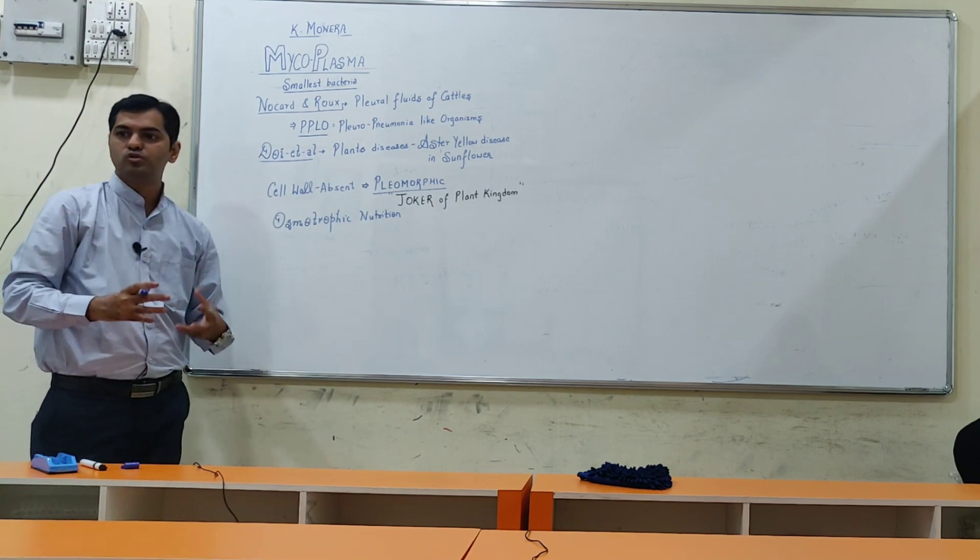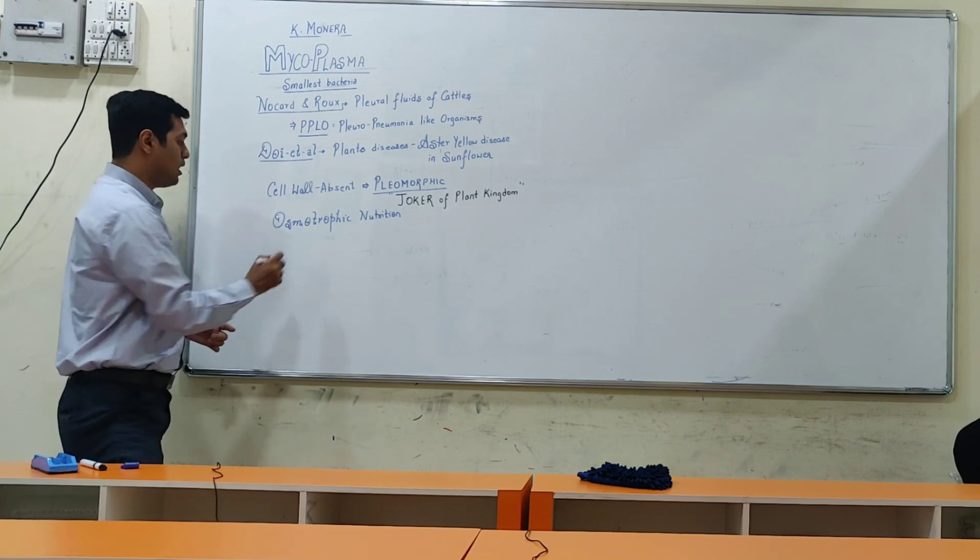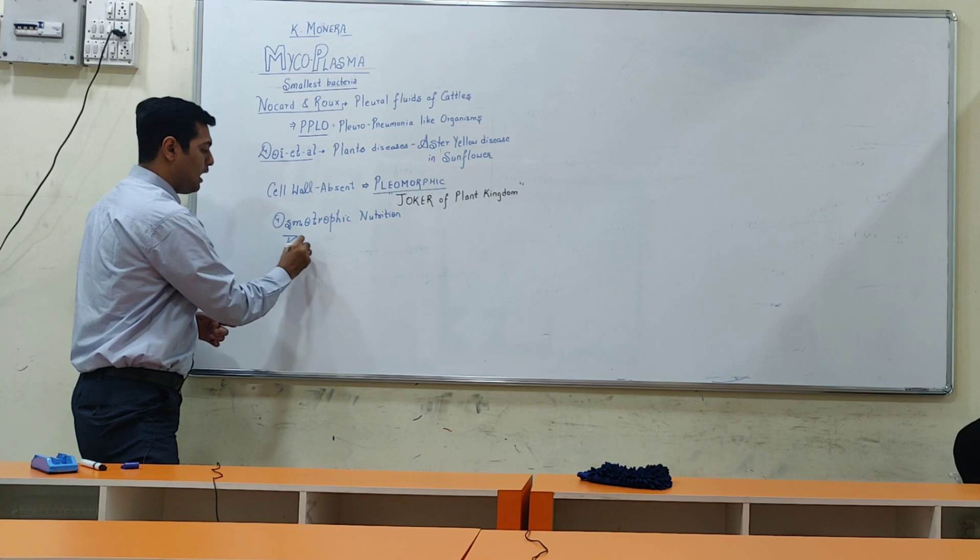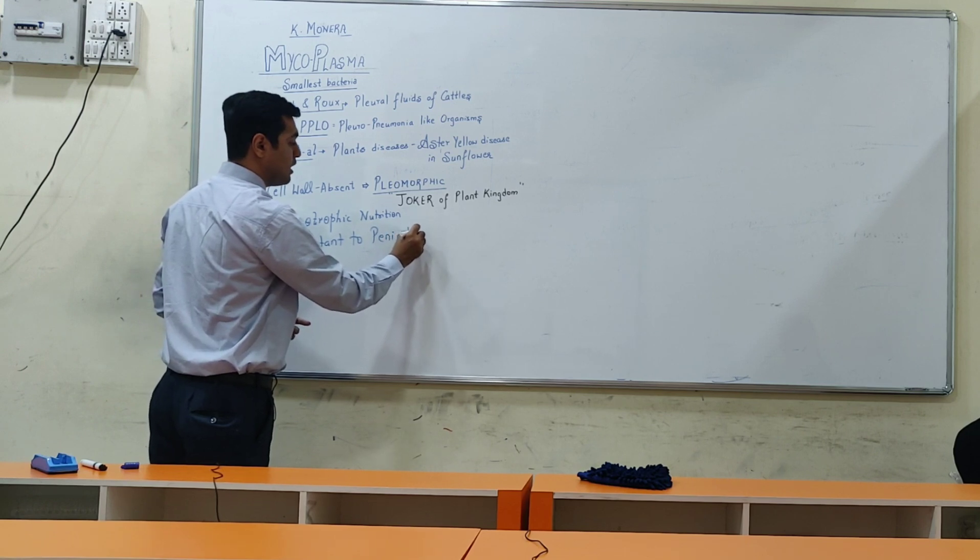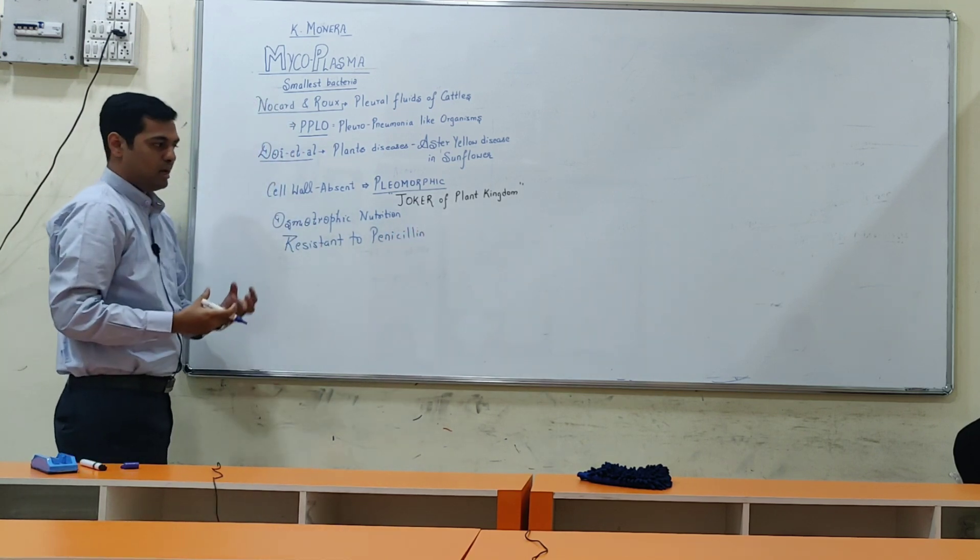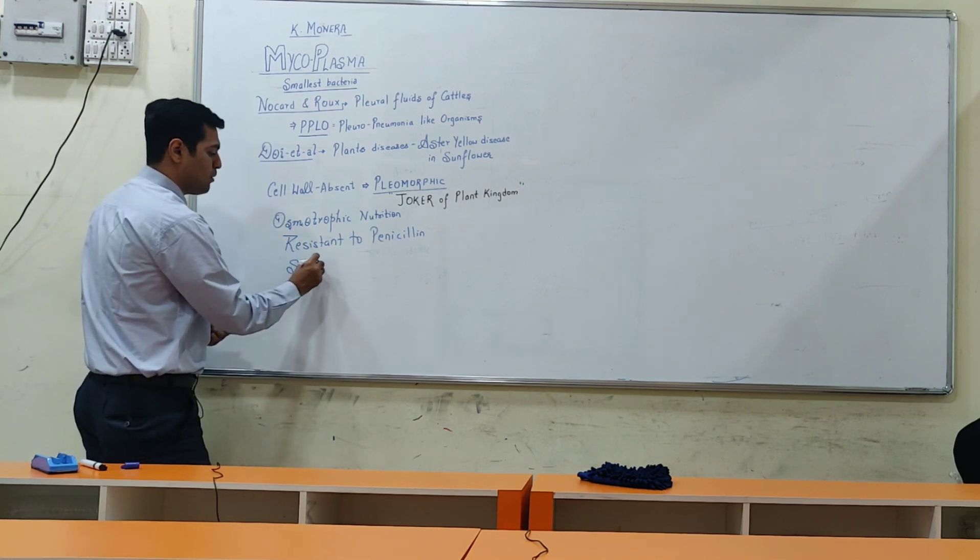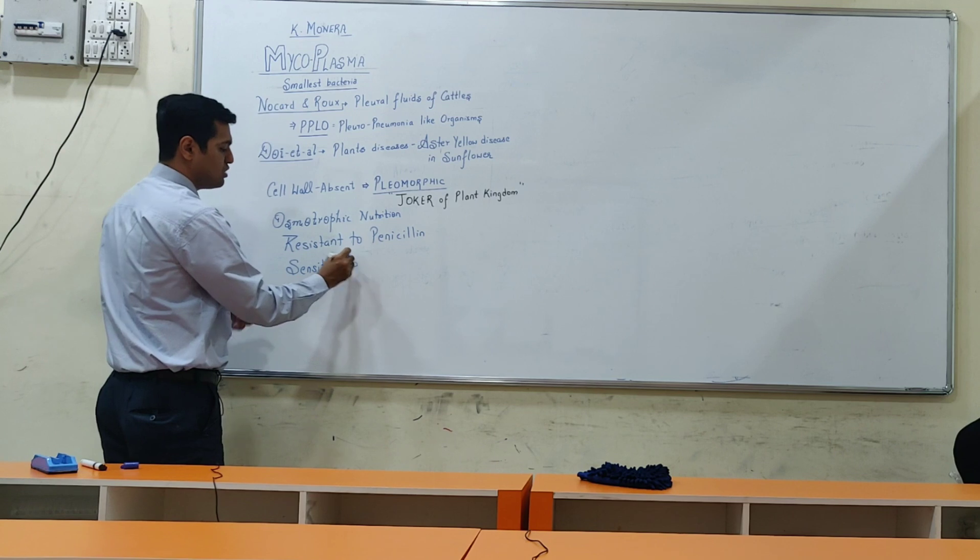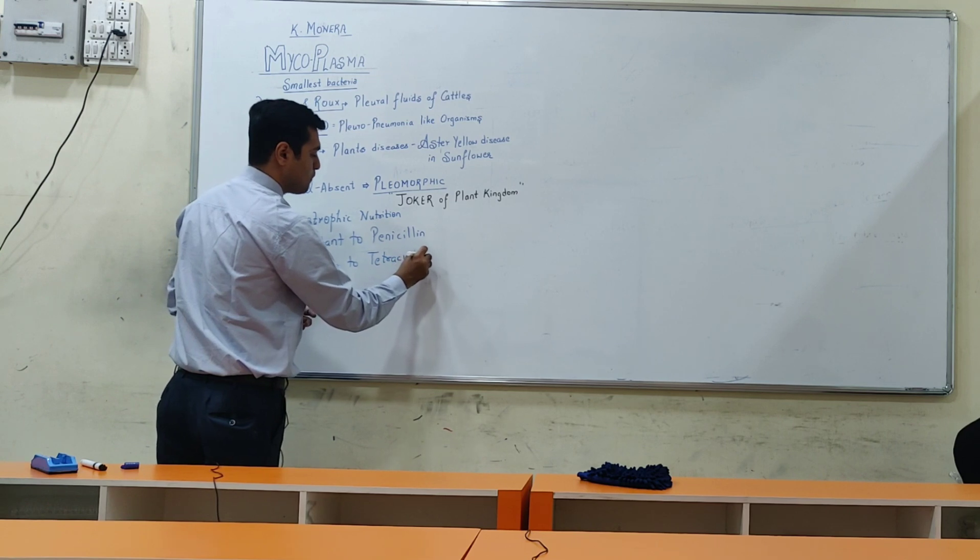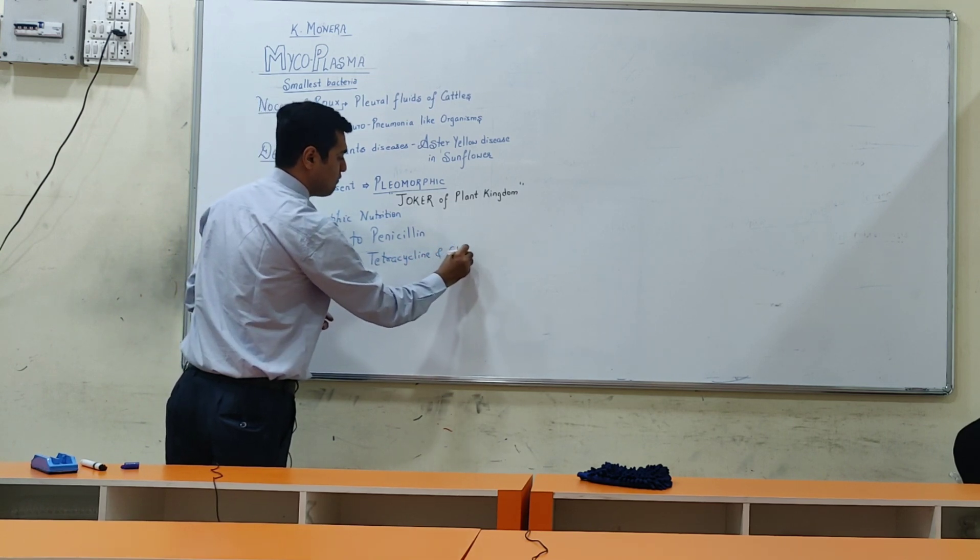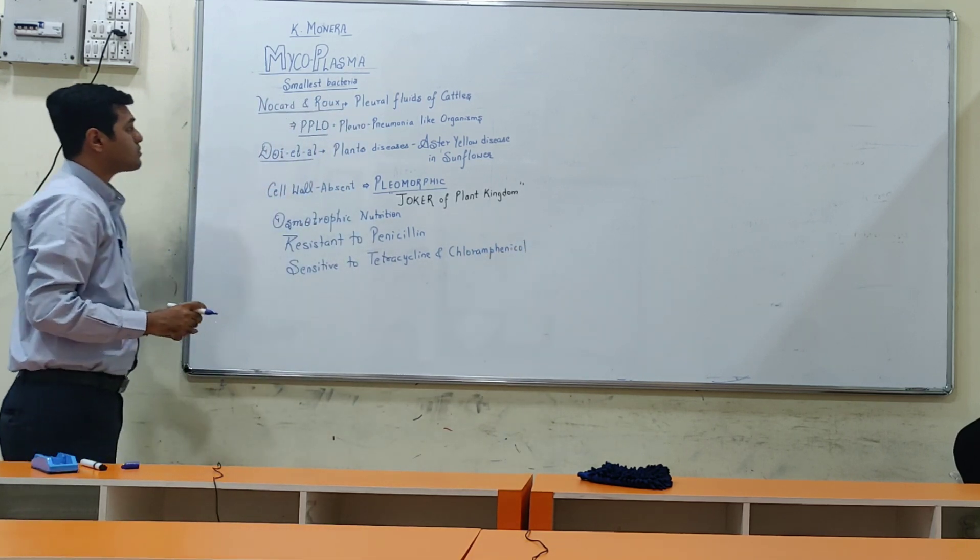One of the most commonly used antibiotics to kill bacteria is penicillin. Penicillin is one of the first antibiotics discovered. But Mycoplasma are resistant to penicillin antibiotics. However, we have alternative antibiotics available to which Mycoplasma are sensitive, such as tetracycline and chloramphenicol.